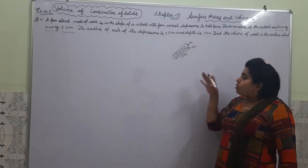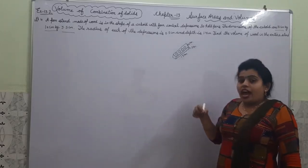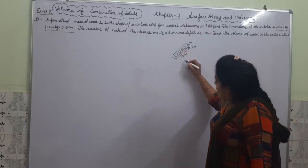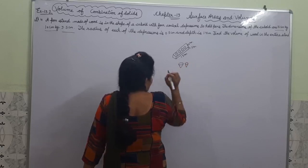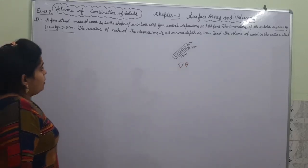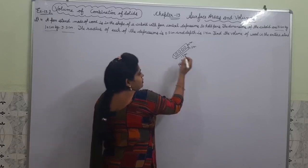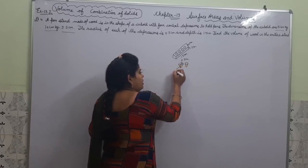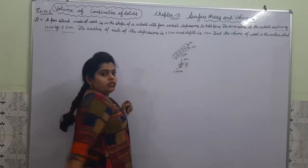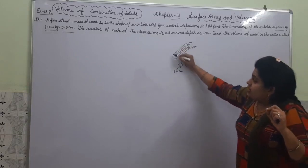From this cuboidal pen stand, 4 conical depressions have been cut. The radius of each conical depression is 0.5 cm, and the depth is 1.4 cm. We have to find the volume of the wood in the entire pen stand.